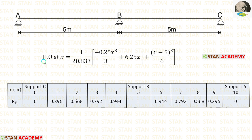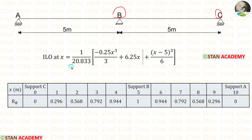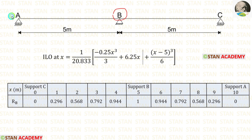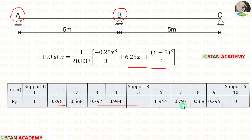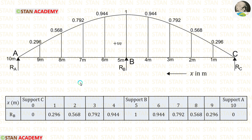Now let us calculate the influence line ordinates. The ordinates start at point C and end at point A. From point C to point B, we apply the first formula. From point B to point A, we use the whole formula. In this way, we can make the ordinates. After making the ordinates, we can draw the influence line diagram. Here, all of the values are positive.